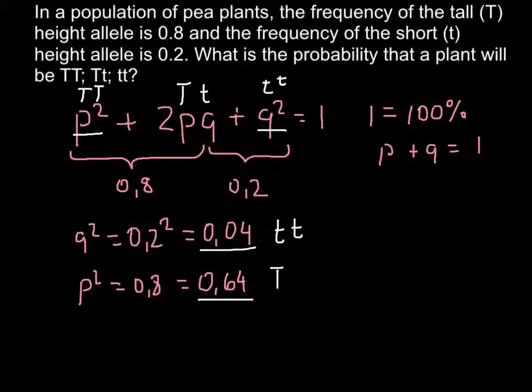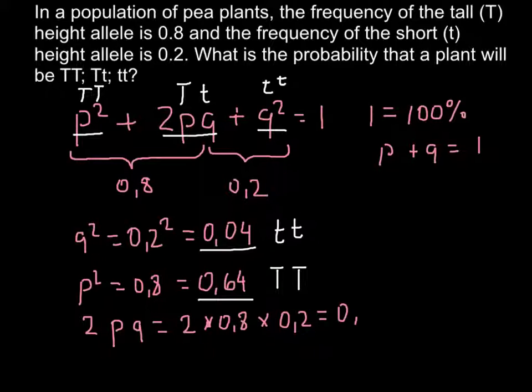Now it's very easy to find the frequency of the heterozygous. We just have to multiply 2 by p and by q. This is 2 multiplied by 0.8 and by 0.2, and the answer is 0.32. This is the frequency of the heterozygous, capital T small t.